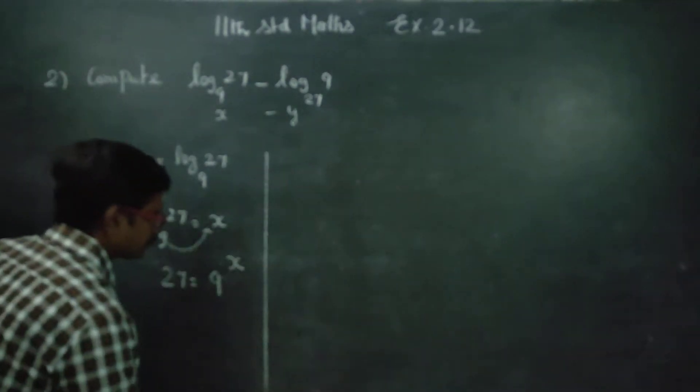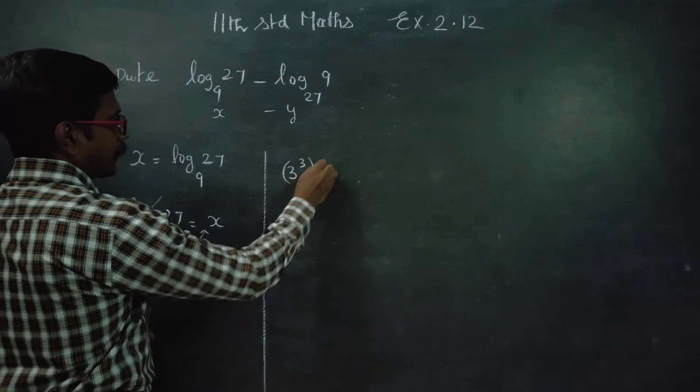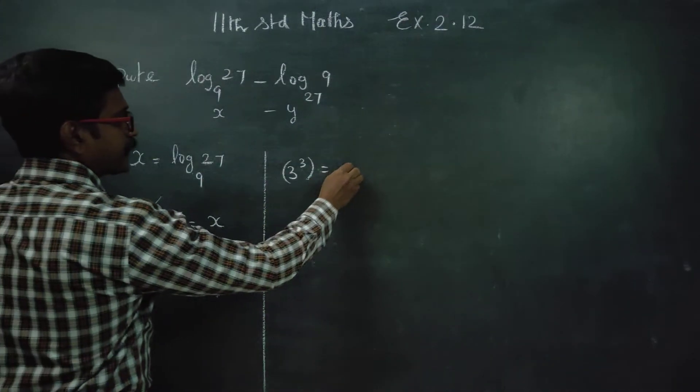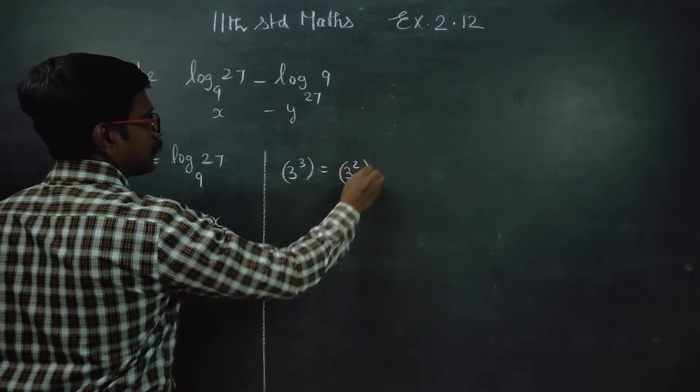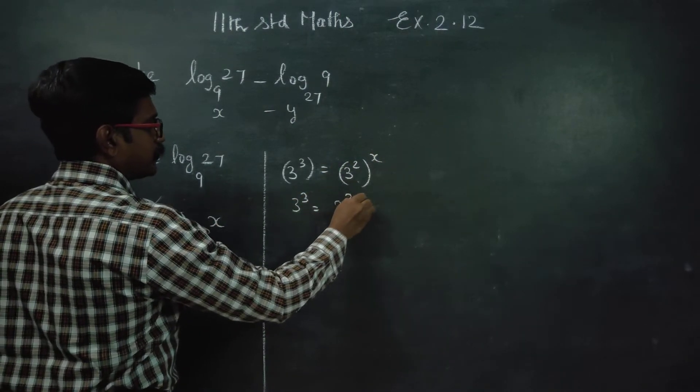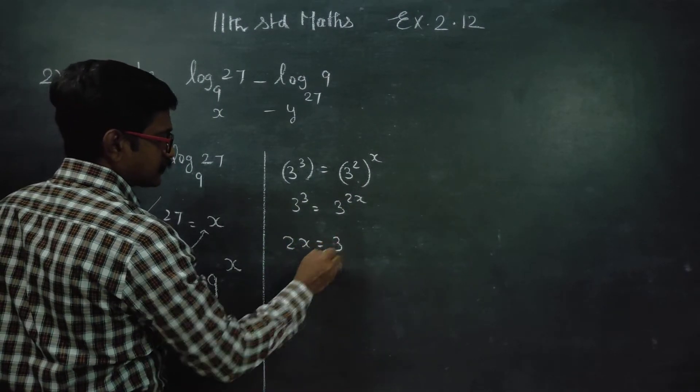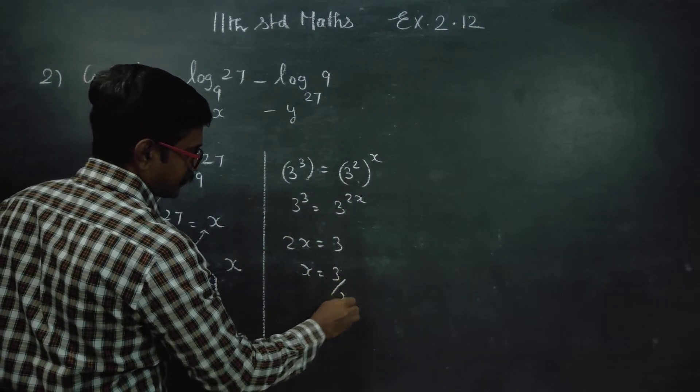27 is equal to 3 power 3. 9 is equal to 3 square. 3 power 3 is equal to 3 square power X. When base is the same and we have power on power, we multiply. 2X is equal to 3. X is equal to 3 by 2.